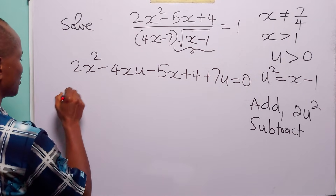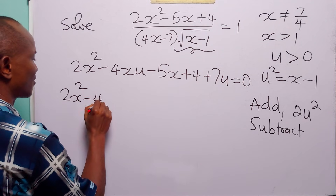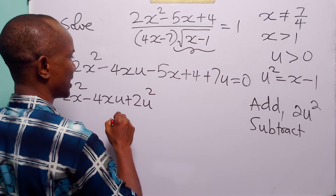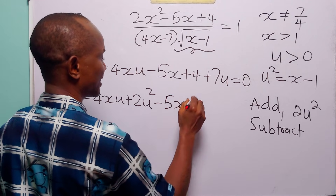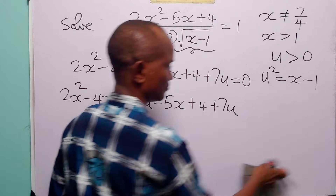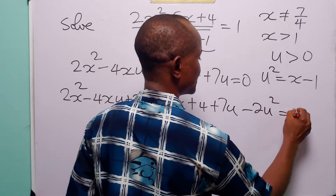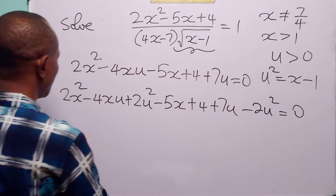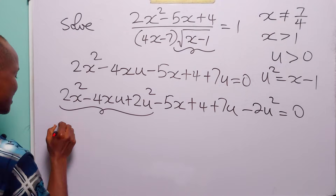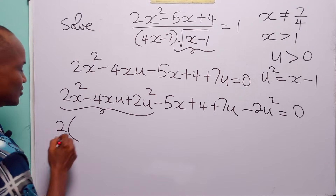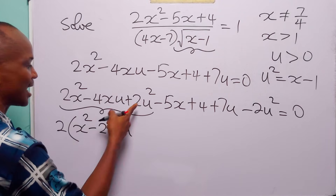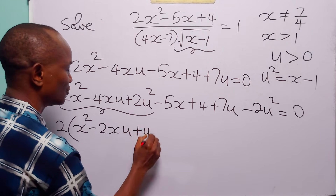When we do that, this equation becomes 2x squared minus 4xu plus 2u squared, then minus 5x plus 4 plus 7u, minus 2u squared, is equal to 0. Let us factorize the first three terms. We can see a common factor of 2, giving us 2 times (x squared minus 2xu plus u squared). And 2u squared divided by 2 is u squared.